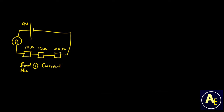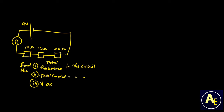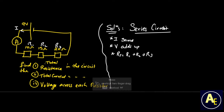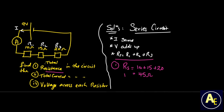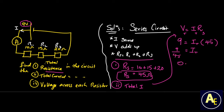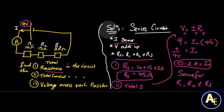An example is given with three resistors — R1, R2, and R3 — of 10, 15, and 20 ohms respectively. We are asked to find the total resistance, the total current, and the voltage across each resistor, given a 9-volt battery. In a series circuit, both voltage and resistances add up, so the total resistance is 10 + 15 + 20 = 45 ohms. Using Ohm's Law, the total current is V/R = 9/45 = 0.2 amps.